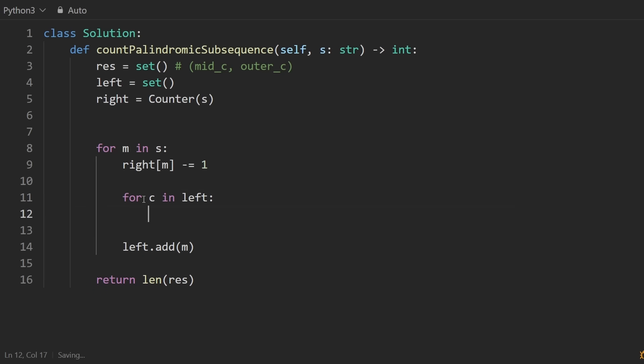And we want to check, is this character also on the right side? So if write of this character and the count of that is greater than zero, then we have found a palindrome. Result dot add this pair, the middle and the outer character. It's possible that this is a duplicate. That's why we have this hash set in the first place.